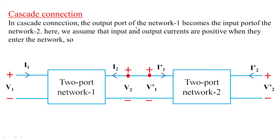It resembles the output port of network 1 becoming the input port of network 2. Here we assume that the input and output currents are positive when they enter into the network, so I1' will be equivalent to minus I2. You can see both directions of the current — the output current I2 and the input current I1' are opposite to each other and in series, that's why I1' equals minus I2.